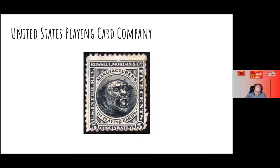They bought the defunct Cincinnati Inquirer, and in 1881 they brought in someone who really knew playing cards and started producing them aggressively. They were able to undercut competitors by more than 50% — their cards were much cheaper — and they just started dominating. In 1885 they released Bicycle playing cards, which are probably what most people have at home.